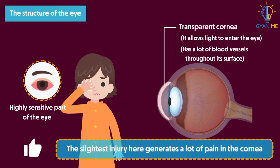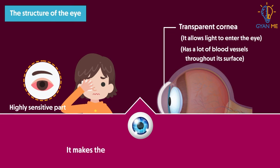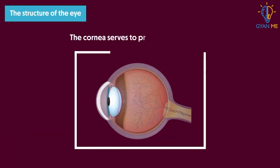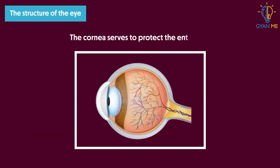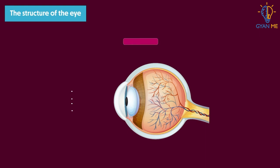This is important from a defense point of view as well — it makes the eye aware of any danger or injury. Thus, the cornea serves to protect the entire eye. Its refractive index is 1.37.